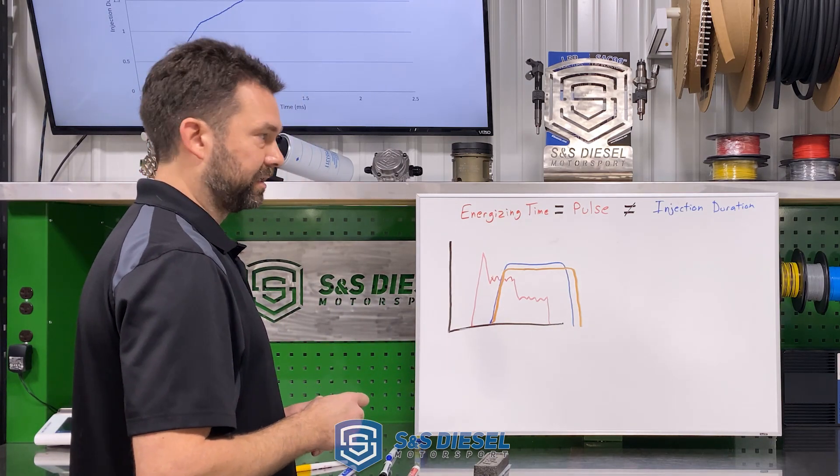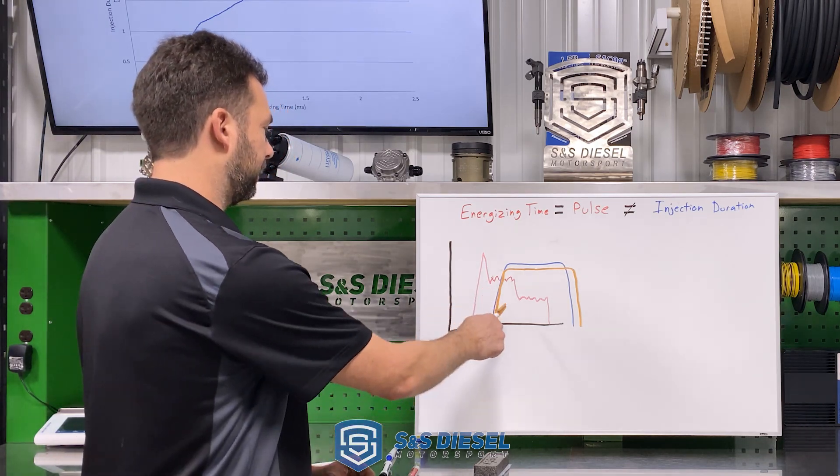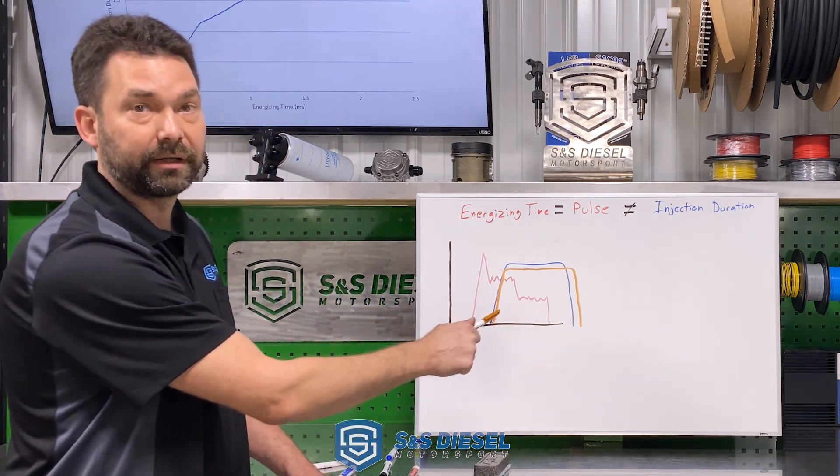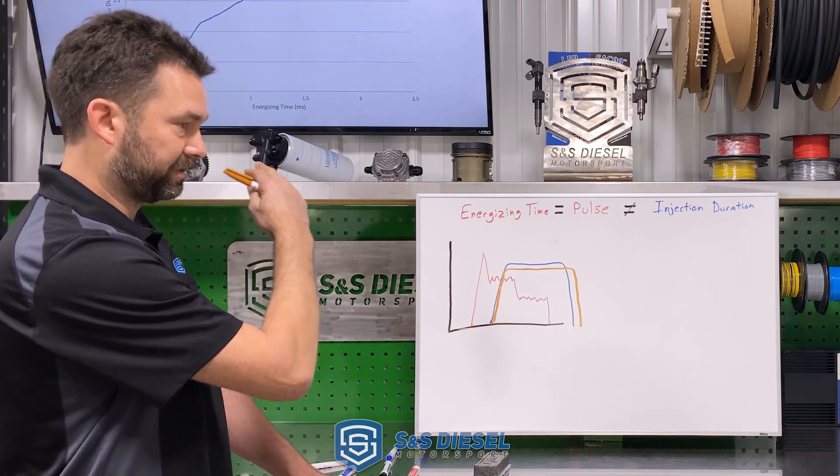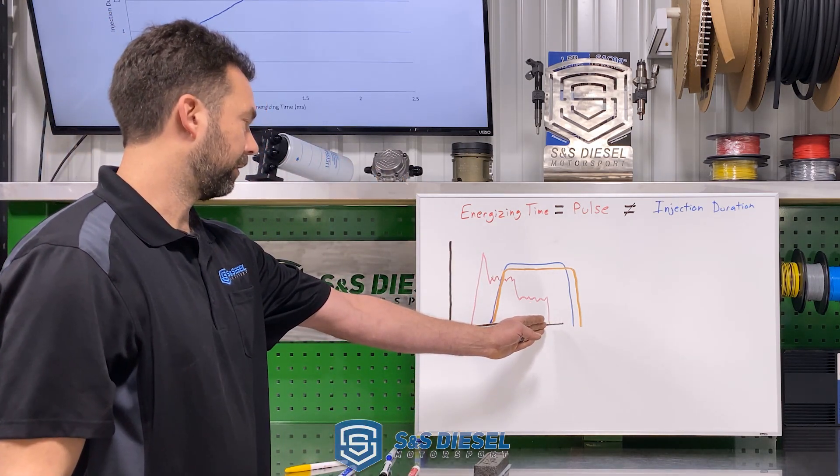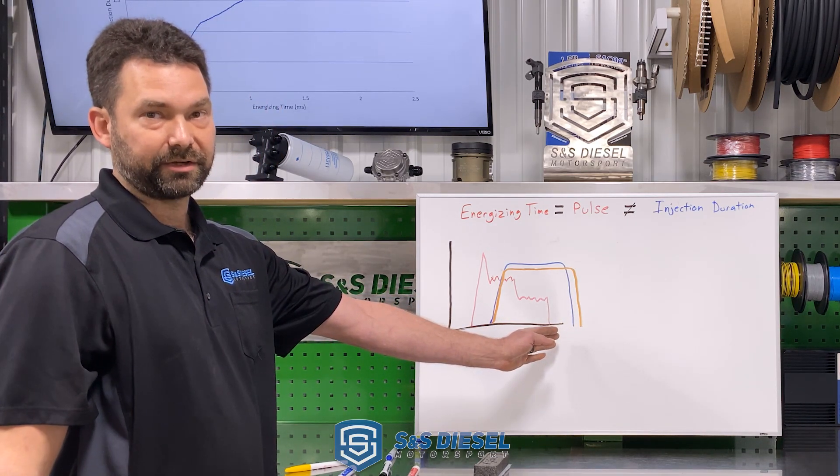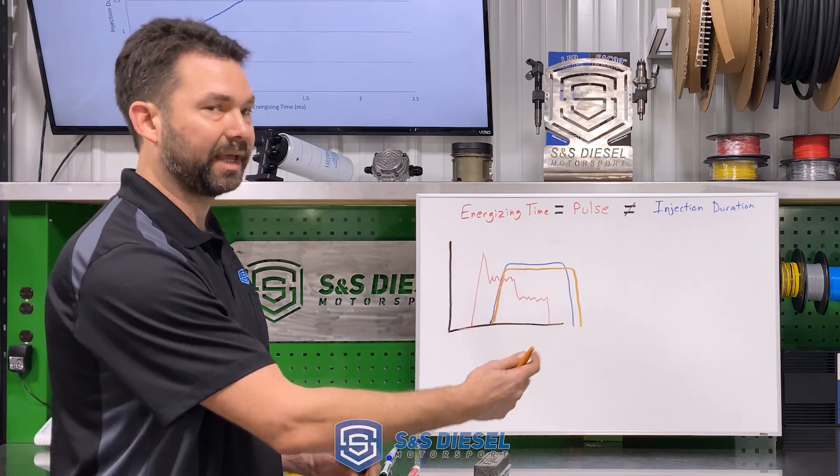And the next reason that this would matter is for tuning of your engine. If you're concerned about when your end of injection is happening, because you don't want to be injecting as the piston's heading down too far, you want to know from the end of energizing to when your end of injection is, so that you can protect your engine from injecting too late in the cycle.